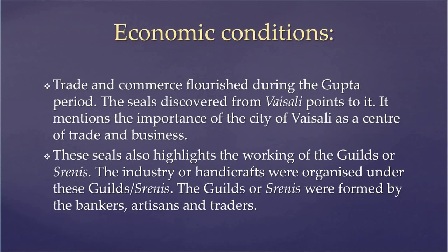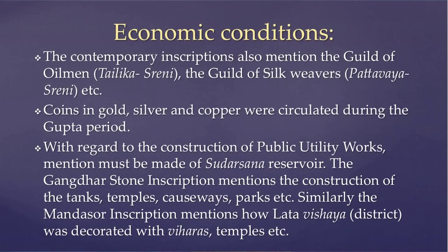Moving on to economic conditions: seals discovered from Vaishali point to the importance of that city as a center of trade and commerce, indicating that business and commerce continued in full swing during the Guptas. These seals also highlight the working of guilds or Shrenis, under which industries and handicrafts were organized. The guilds were formed by bankers, artisans, and traders. The Indore copperplate inscription mentions a guild of oilmen (Thailaka Shreni), and the Mandasaur inscription mentions a guild of silk weavers (Pattavayar Shreni). Money economy was the base of the Gupta empire, as revealed by the circulation of coins in gold, silver, and copper.